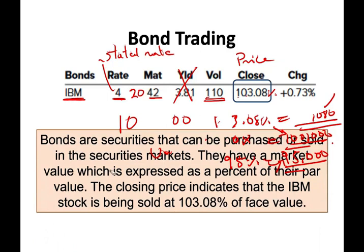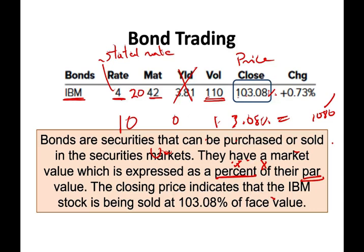Bonds are securities, just basically like stocks, that can be purchased or sold in the securities market — basically Wall Street. They have a market value expressed as a percentage times the par. The closing price indicates that the IBM bond is being sold at 103.08% of face value. Now we need to worry about how to issue a bond.